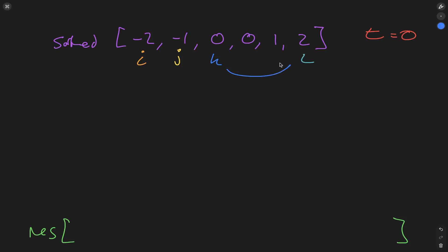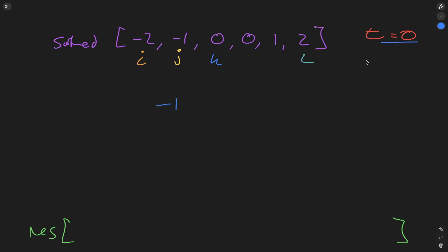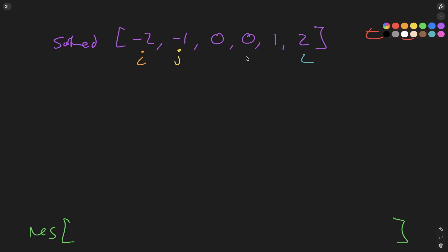k is less than l so we carry out the addition: minus two plus minus one plus zero plus two equals minus one. Is that equal to zero, the target? No. Because the array is sorted, we know values to the right of k are equal to or greater than k, so we increment k. The next value is the same as the previous, so we skip it.